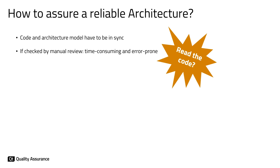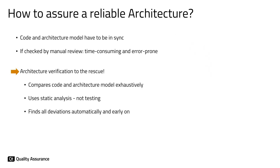How can we assure that an architecture is reliable? We have to make sure that code and architecture model are in sync. We could do this by manual reviews — read the code and also read the model — but this is time consuming and error prone. So this is where architecture verification comes to the rescue. This is an automated process that compares code and the architecture model. It's based on static analysis techniques, not testing, and it finds deviations automatically and early in the process.